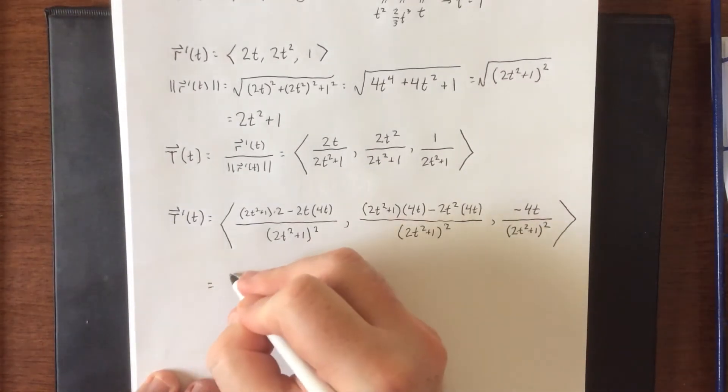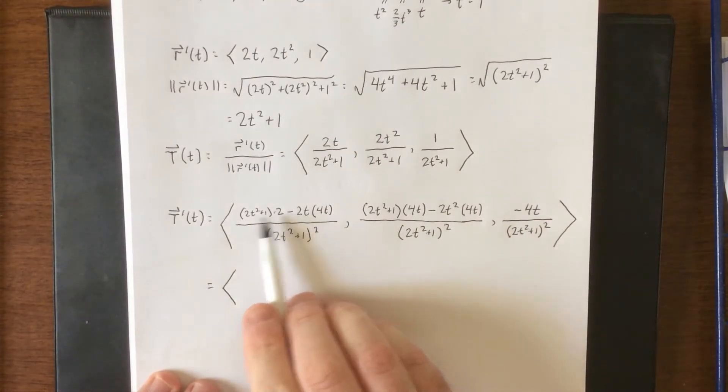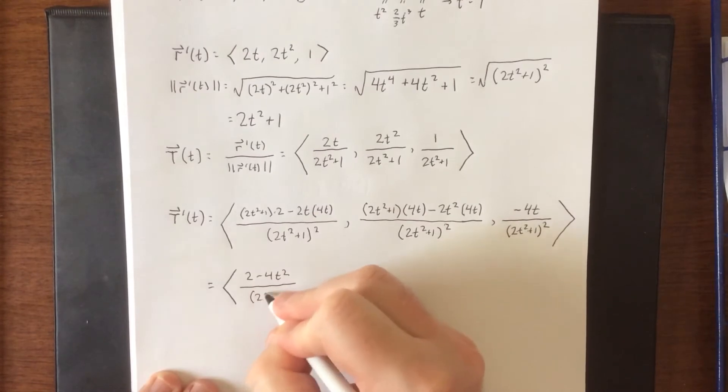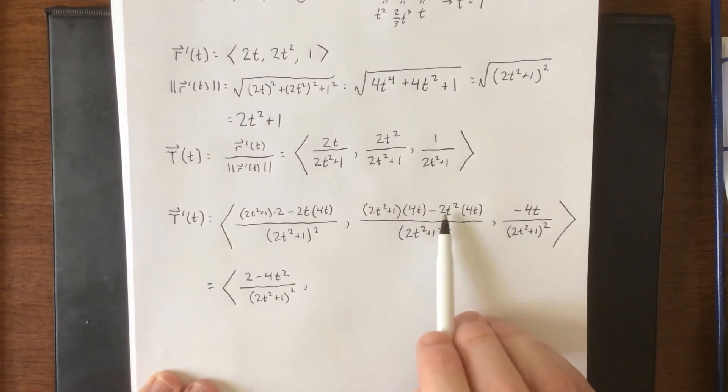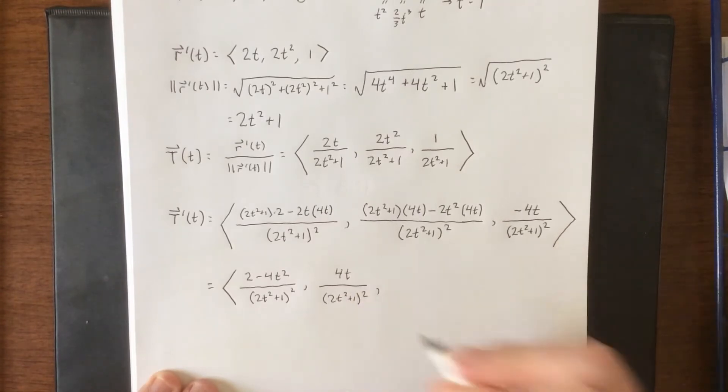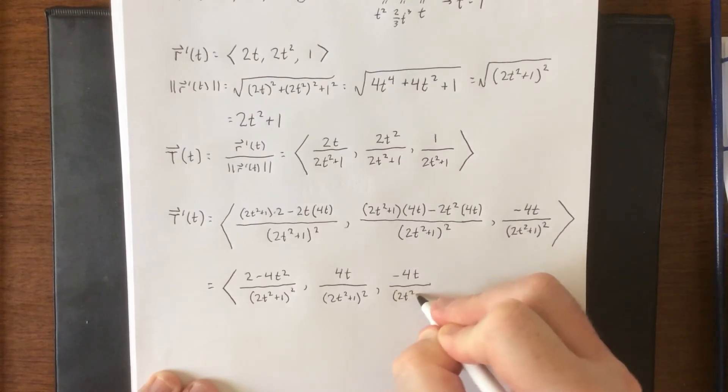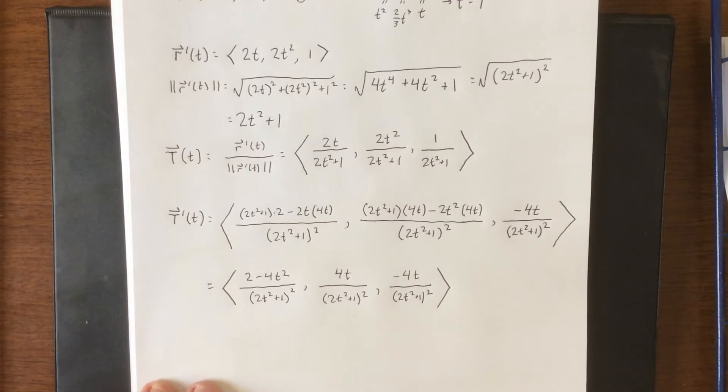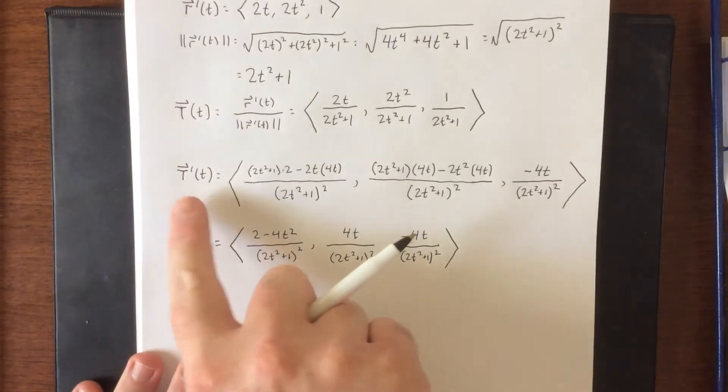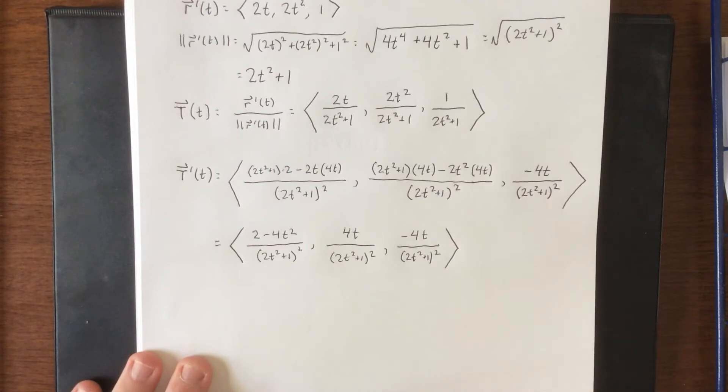Now all of this is going to need to be simplified a bit, so let's go ahead and do that. Let's see, distribute this, that'll be 4t squared minus 8t squared, and then we'll have a positive 2. So this will be 2 minus 4t squared over 2t squared plus 1 quantity squared. On this one, we have a 2t squared times 4t minus 2t squared times 4t, so those will cancel each other out. We'll be left with 4t over 2t squared plus 1 squared. The last one stays as is. So really fun fact, and you could verify this using a dot product, but the vector that we just got and the unit tangent vector are in fact going to be orthogonal to each other. We investigated that in the proof of the formula for the curvature. Now that we've taken this derivative, our calculus is technically done. So what I'd like to do at this point is go ahead and start plugging in some numbers.